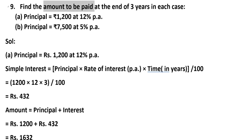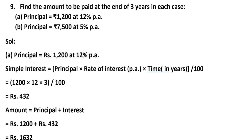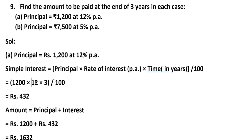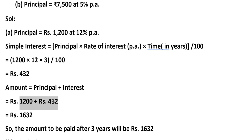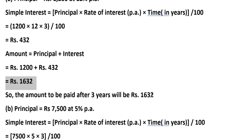Ninth problem: Find the amount to be paid at the end of 3 years. (A) Principal = Rs. 1,200 at 12% per annum. Simple Interest = (Principal × Rate × Time) ÷ 100 = (1,200 × 12 × 3) ÷ 100 = Rs. 432. Amount = Principal + Interest = Rs. 1,200 + Rs. 432 = Rs. 1,632. So the amount to be paid after 3 years is Rs. 1,632.